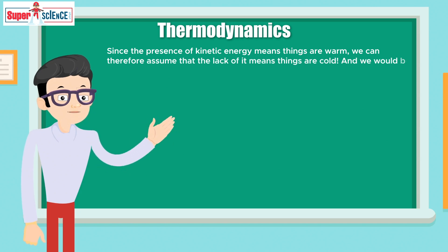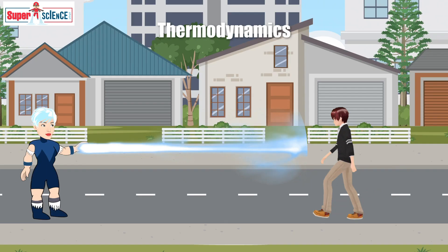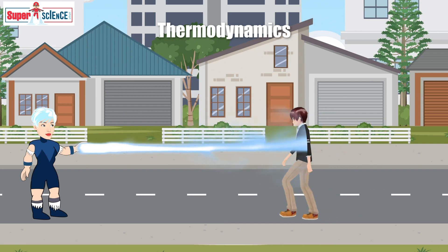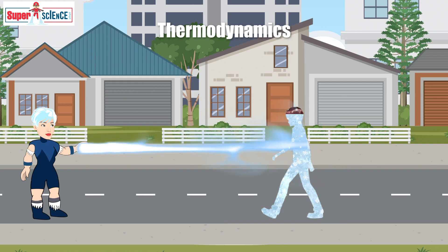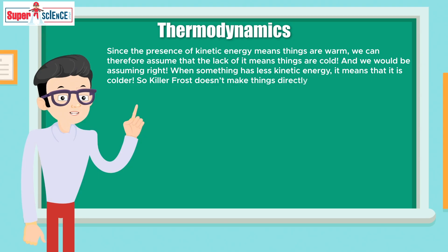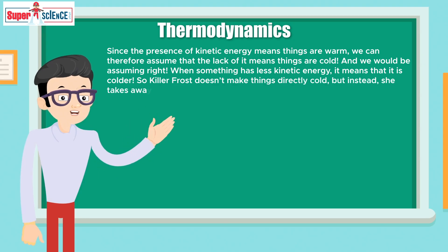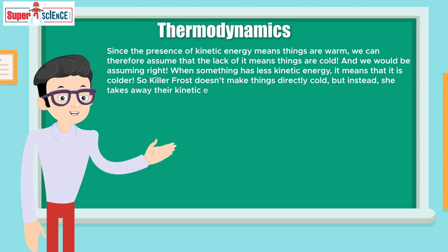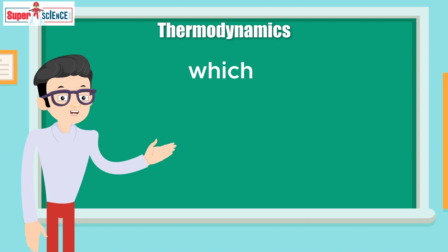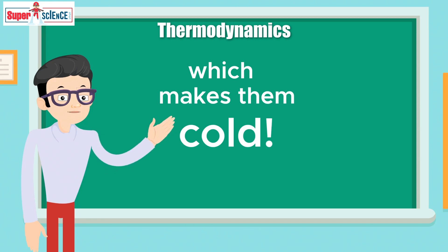We can assume that the lack of kinetic energy means that things are cold — and we would be assuming right. When something has less kinetic energy, it means it's colder. So Killer Frost doesn't make things go directly cold, but instead she takes away their kinetic energy, which makes them cold.